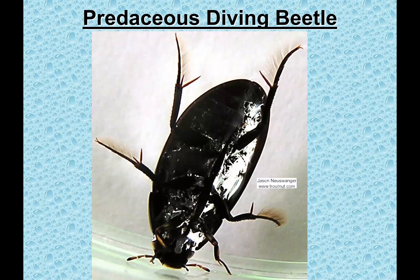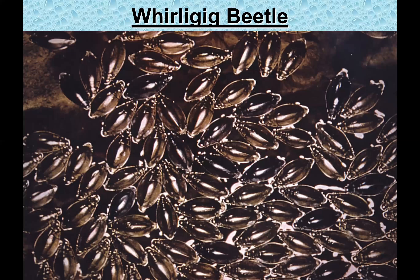Beyond the three scored categories, there are other interesting macroinvertebrates you might see. The predaceous diving beetle is a notable one — it practices a form of scuba diving, grabbing a small air bubble and strapping it to its belly using hairs on its legs, then diving to the bottom of the stream for 20 to 30 minutes to hunt for food. Whirligig beetles are another type — seen on the water surface moving very quickly in groups, hard to catch. If you pick them up, beware of their powerful scent gland.